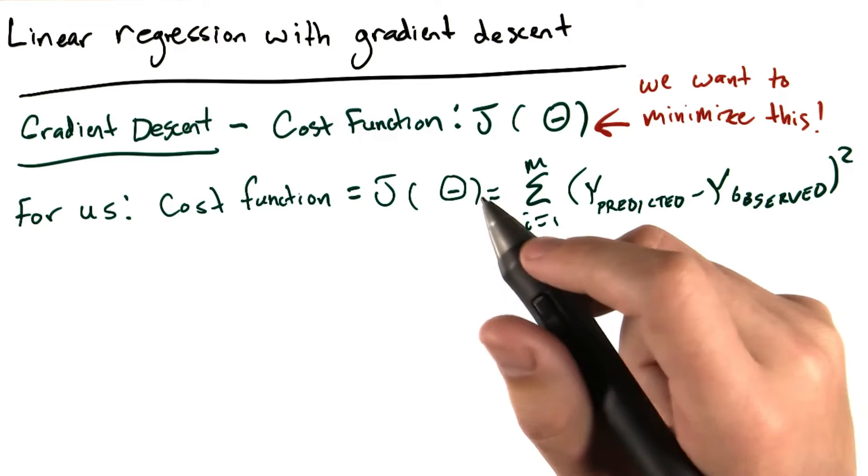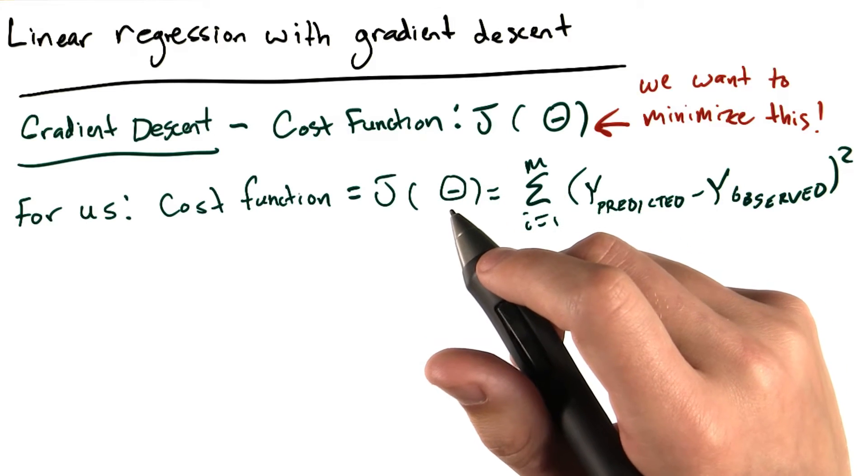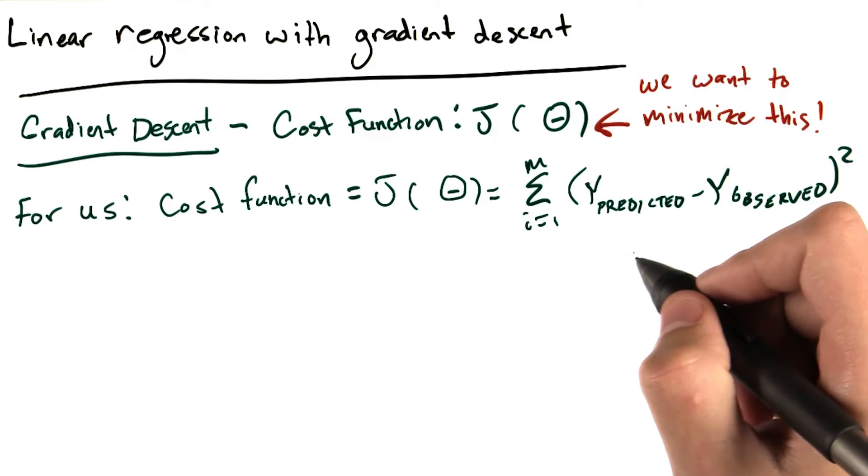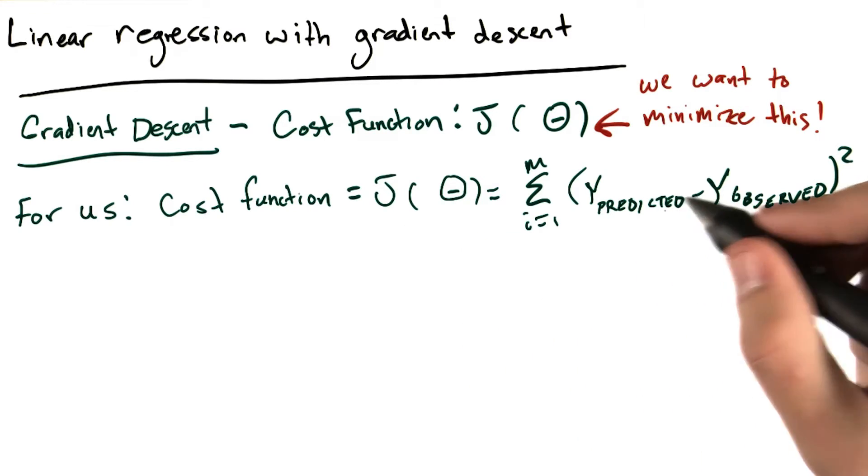As we discussed just a moment ago, when we're doing linear regression, our cost function J of theta can simply measure the sum of the squares of the differences between our predicted and observed values.